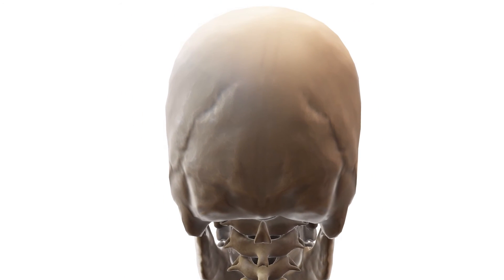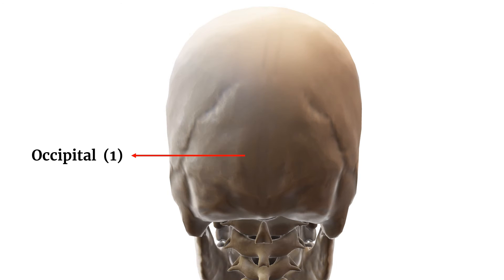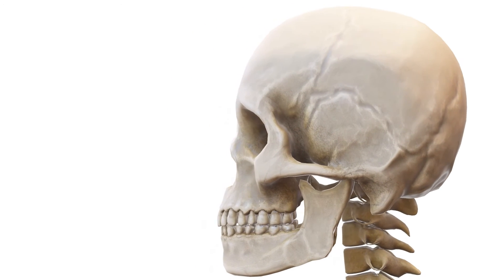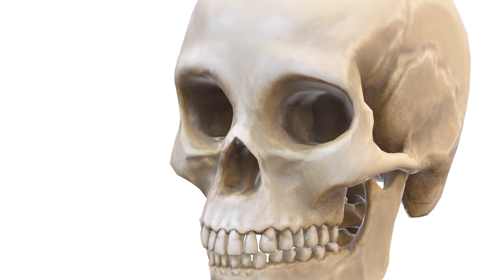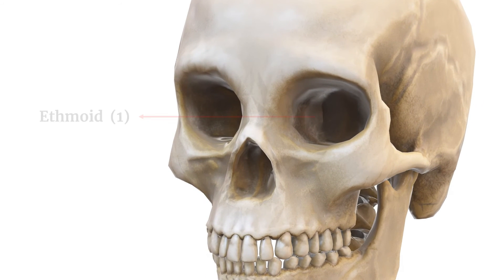Occipital bone: found at the back and base of the skull, it houses the foramen magnum, allowing the spinal cord to pass. Sphenoid bone: a butterfly-shaped bone at the base of the skull that supports the brain and forms part of the eye sockets. Ethmoid bone: situated between the eyes, it forms part of the nasal cavity and the eye sockets.